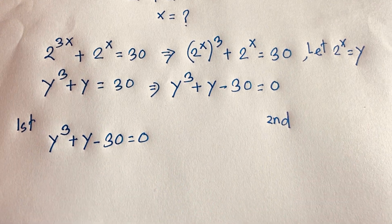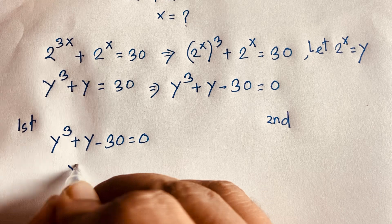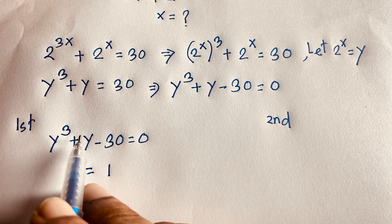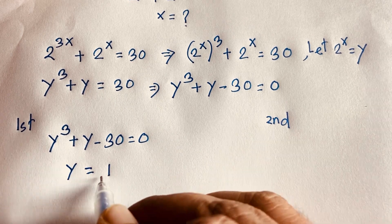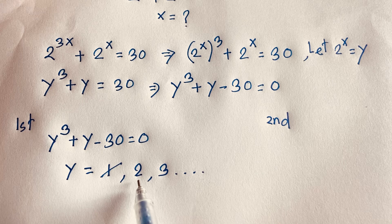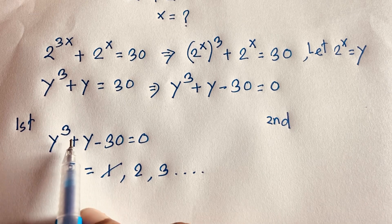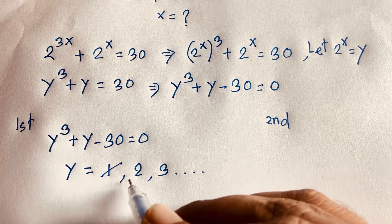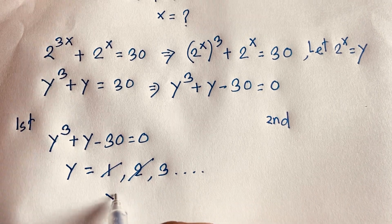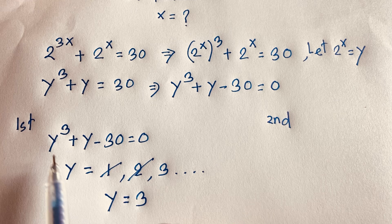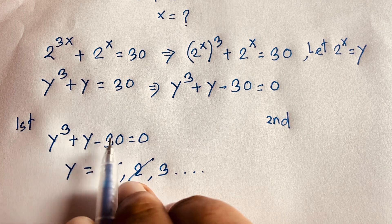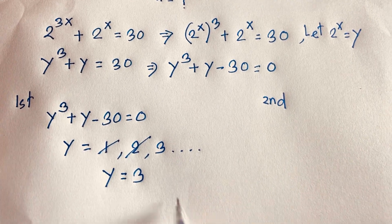Let's try some values. If y = 1: 1 + 1 − 30 ≠ 0, not possible. If y = 2: 8 + 2 − 30 ≠ 0, not possible. If y = 3: 3³ = 27, and 27 + 3 = 30, so 30 − 30 = 0. Yes! So y = 3 is a root.